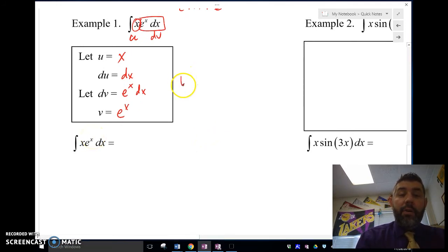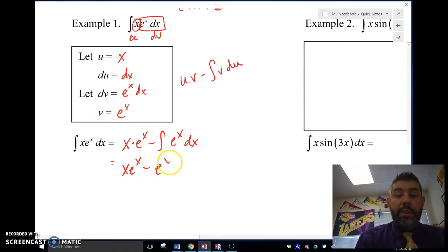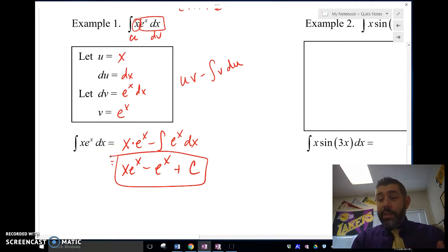So now I've got ultraviolet voodoo. So I'm going to rewrite this now. U is x times v, which is e^x, minus the integral of v, which was e^x times du, which was dx. Ultraviolet voodoo. x e^x minus the integral of e^x is e^x plus c. Bam. All right, so that's how we use integration by parts.